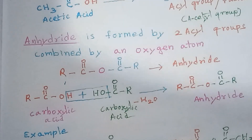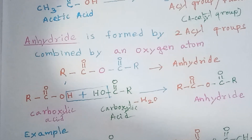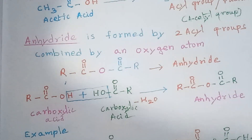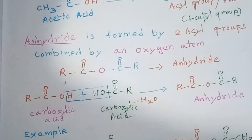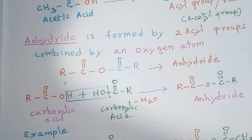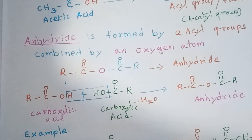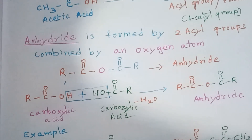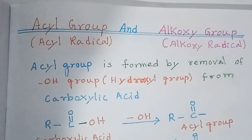As an example, acetic acid is CH3-C double bond O-OH. Taking two molecules of acetic acid and removing a water molecule (eliminating OH and H as H2O), we get CH3-C double bond O — O — C double bond O-CH3. This is called acetic anhydride.